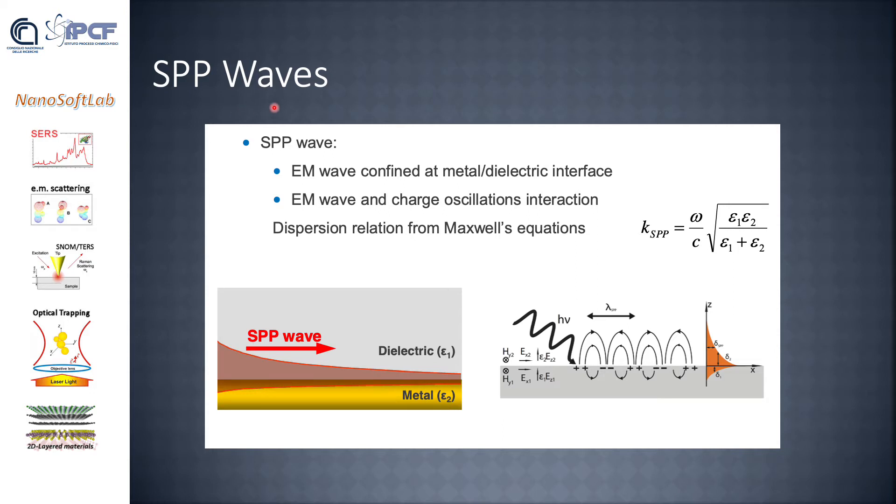When a surface plasmon polariton wave is excited, the electromagnetic wave is confined at the metal-dielectric interface. The electromagnetic wave and charge oscillation interact in a combined mode that propagates along the surface. The solution can be obtained using Maxwell's equations. Light propagates along this mode with a wave vector proportional to ω/c times the square root of ε1ε2/(ε1+ε2), where ε1 is the dielectric constant of the dielectric and ε2 is the dielectric constant of the metal.